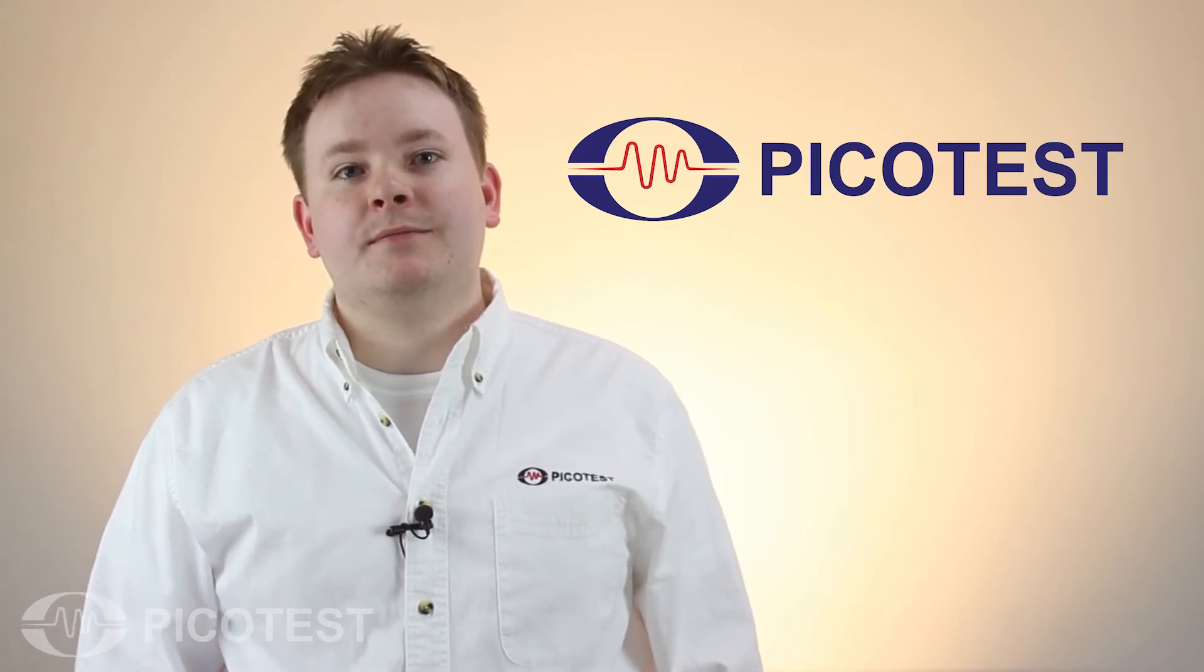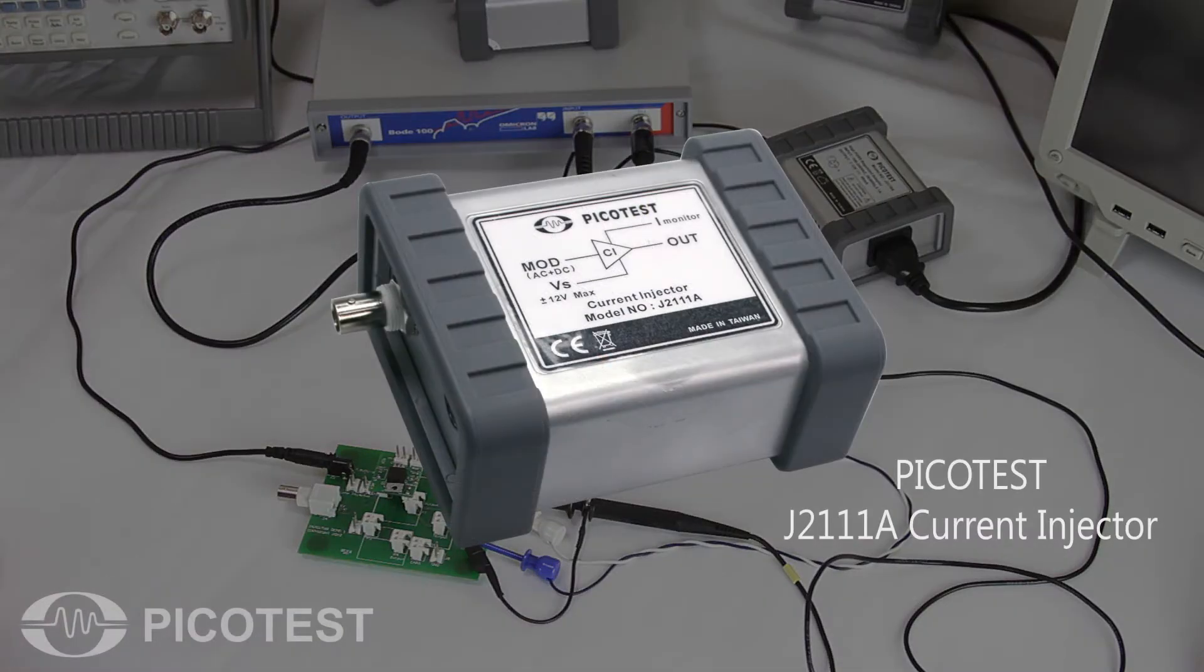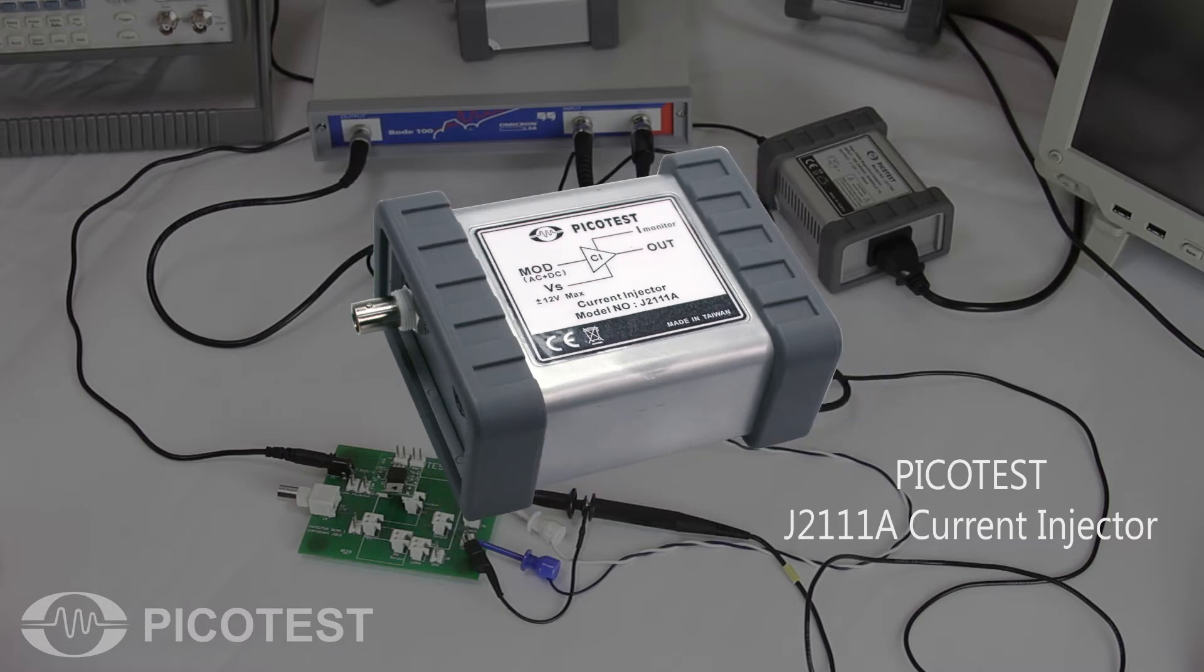The J2111A current injector is a unique voltage controlled current source that is capable of switching load currents up to 100 milliamps with 20 nanosecond rise fall times on positive and negative voltage regulators.